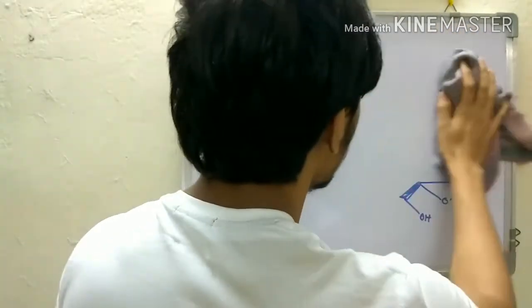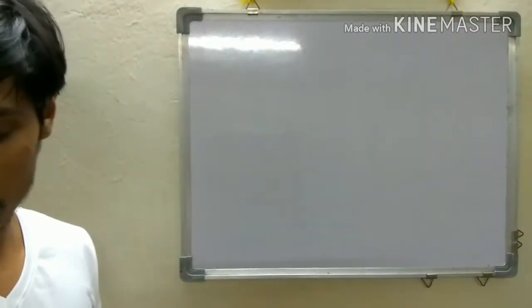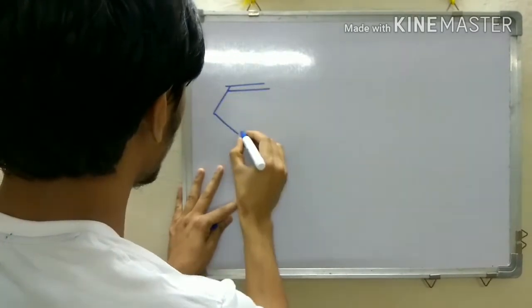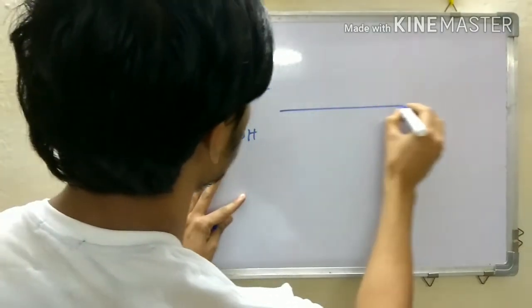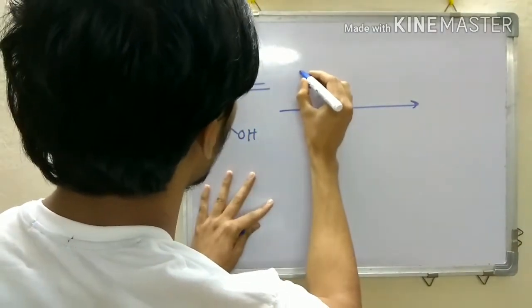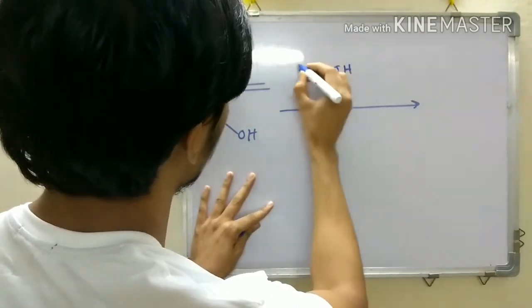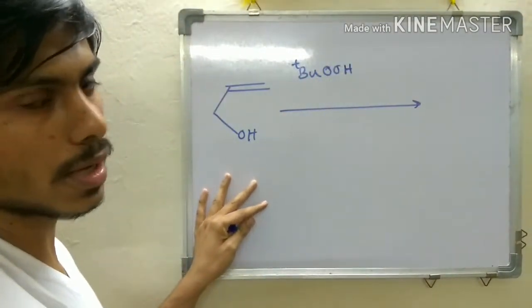What are the reagents used in Sharpless epoxidation method? In this epoxidation method, you have to use tert-butyl hydroperoxide,